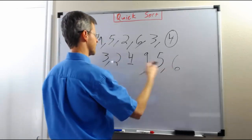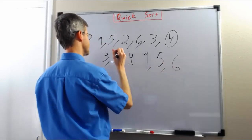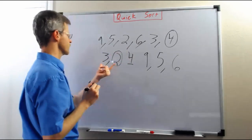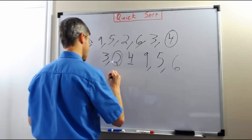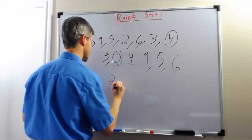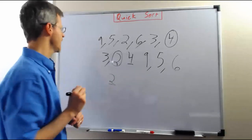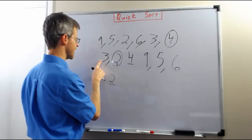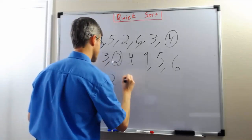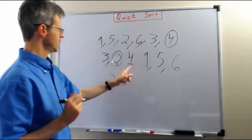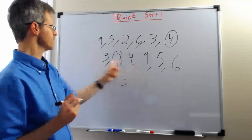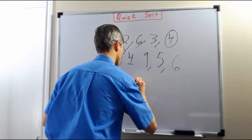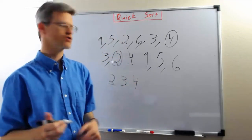Now we're going to sort these two sub-lists using Quicksort. Again, we pick the rightmost number as the pivot. For the list [3, 2], the rightmost number is 2, so we write that down and underline it to show it was the pivot. 3 is greater than 2 so we put it on the right side. Now we copy down our 4, because we know everything on the left was less than 4 and everything on the right is greater than 4 — that's where 4 will go in our final sorted list.